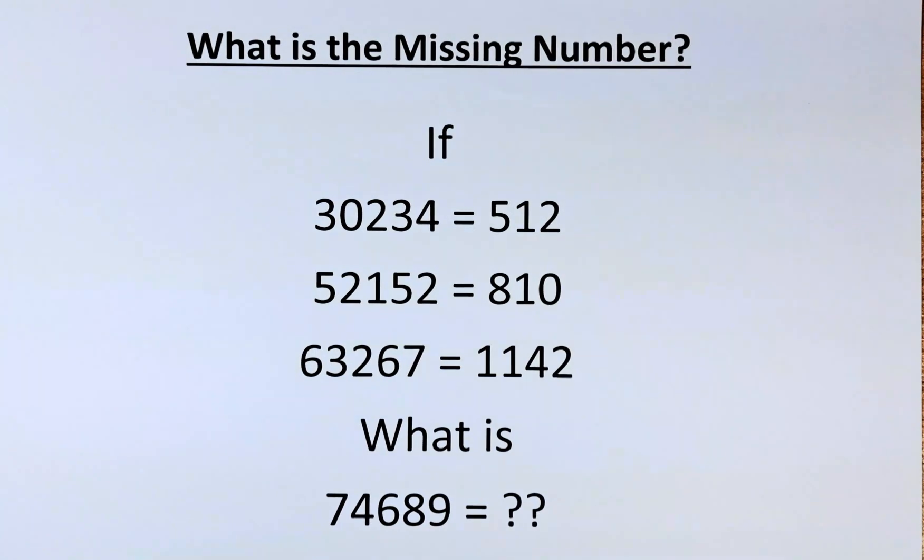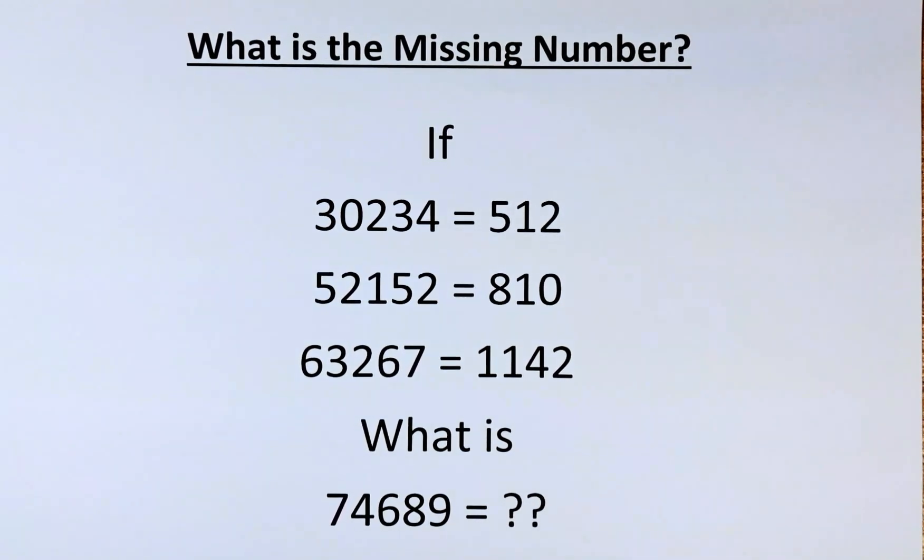The question is if 30234 equals 512, 52152 equals 810, 63267 equals 1142, what then is 74689 equals to? If you look at this puzzle, it looks quite complicated because a 5-digit number will turn out to be either a 3 or 4-digit number.